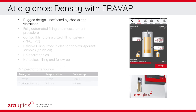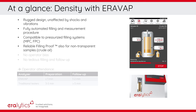AeroLytics' unique density module DENS4052 features a rugged design and is unaffected by shocks and vibrations, making it ideal for field use or mobile applications. Both the filling and measurement procedure are fully automatic and compatible with a pressurized filling system such as an MPC or FPC. By applying AeroLytics filling proof, the density is measured reliably even for non-transparent sample types. Due to the automatic procedure, any operator bias is eliminated and no tedious filling and follow-up is necessary.